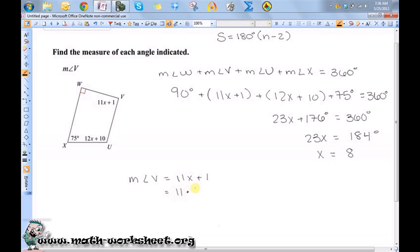So 11 times 8 plus 1. So that's 88 plus 1 or 89 degrees. So the measure of angle V is equal to 89 degrees.